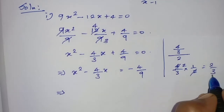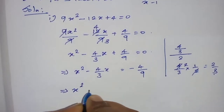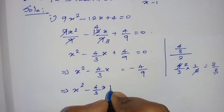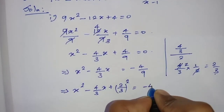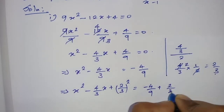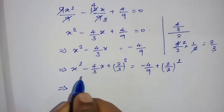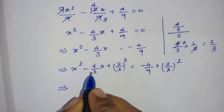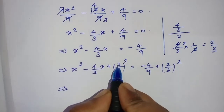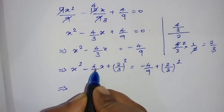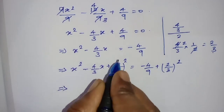We add the square of half the coefficient of x to both sides. So x² minus 4/3 x plus (2/3)² equals minus 4/9 plus (2/3)². Now this is the completing the square step. This fits the formula a² minus 2ab plus b², and using that formula we get the form (a minus b)².